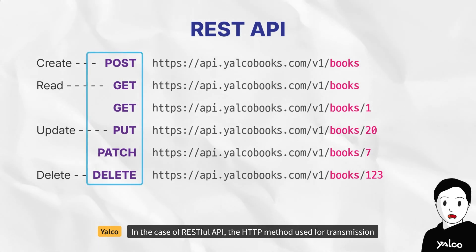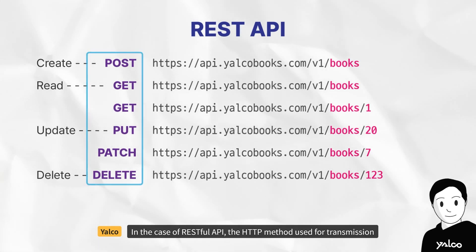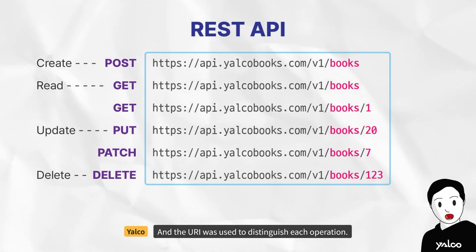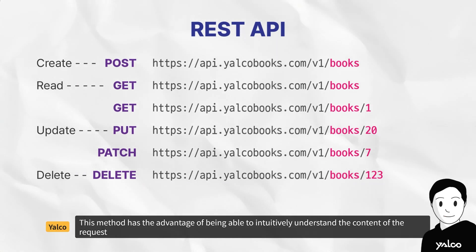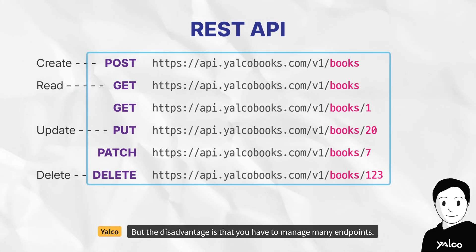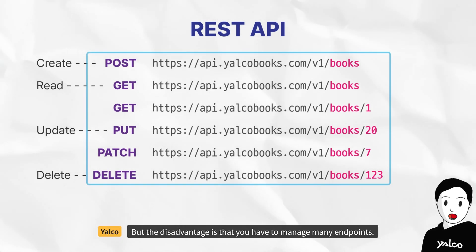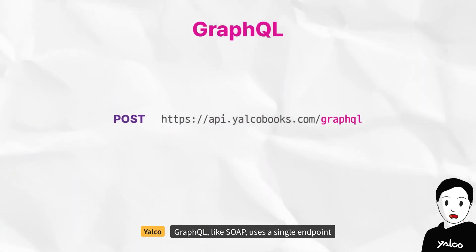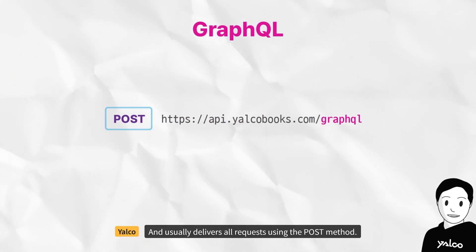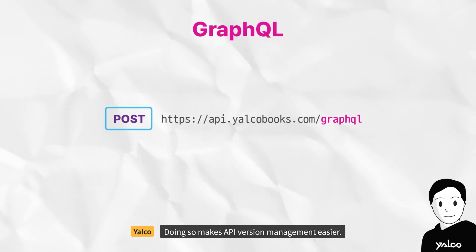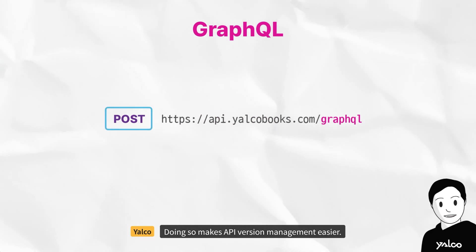In the case of RESTful API, the HTTP method used for transmission and the URI were used to distinguish each operation. This has the advantage of intuitively understanding the content of a request, but the disadvantage is that you have to manage many endpoints. GraphQL, like SOAP, uses a single endpoint and usually delivers all requests using the POST method, which makes API version management easier.